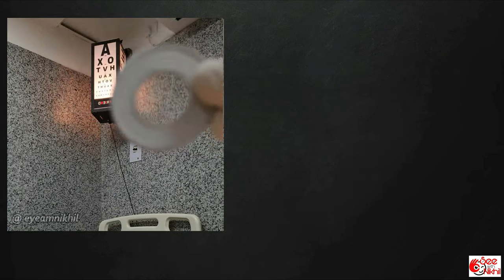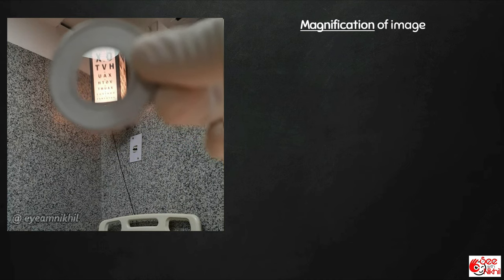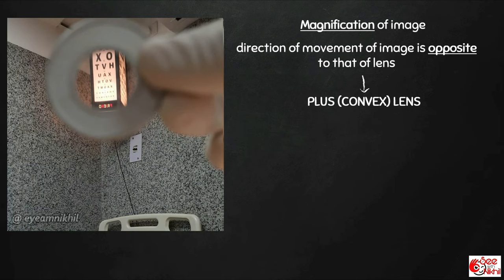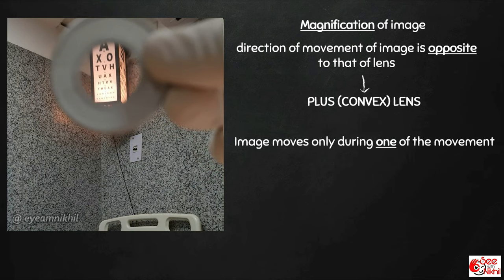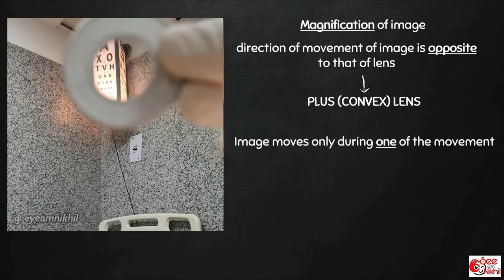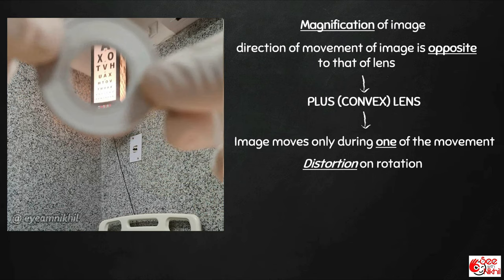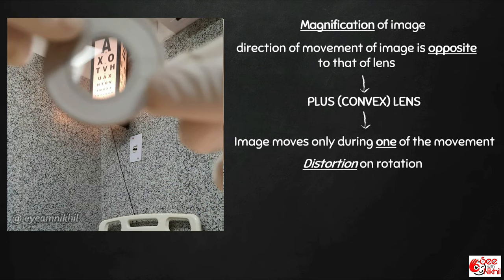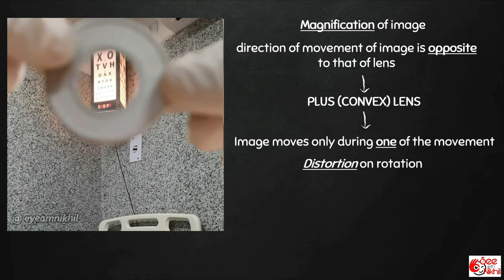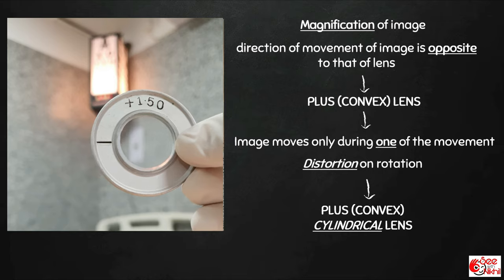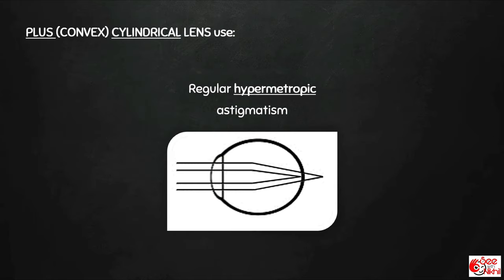Looking at the second lens: there appears to be a slight magnification of image, and movement of the image is in the opposite direction, which means it is a plus lens. The image moves only during vertical movement but not horizontal — that is, it moves only during one of the movements. There is also distortion on rotation, so this is a plus cylindrical lens. Cylindrical lenses are used for correction of astigmatism; a plus cylindrical lens is used in correction of regular hypermetropic astigmatism.